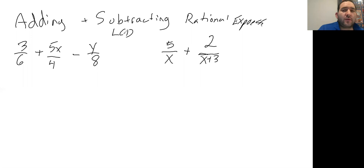If I look at the first example, 3/6 + 5x/4 - y/8, I want to find first an LCD for each of these. Look at each of the numbers - 6, 4, and 8. What would be a least common denominator between 6, 4, and 8? A multiple of each of the numbers that's the smallest.